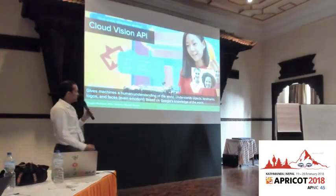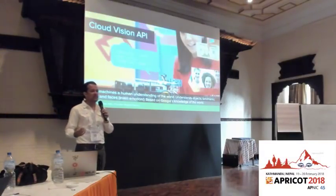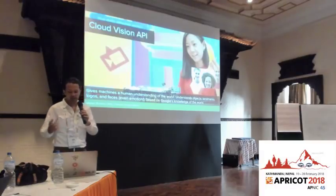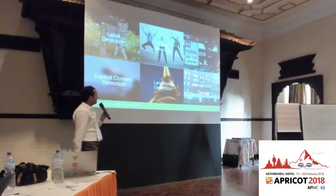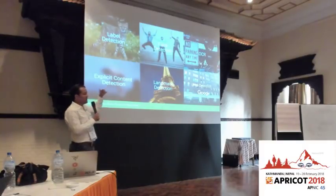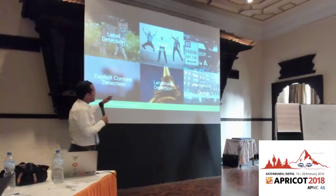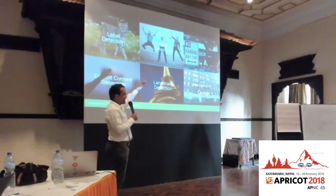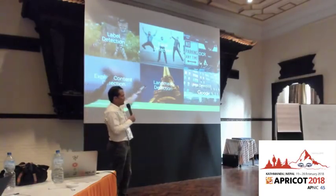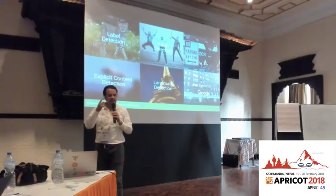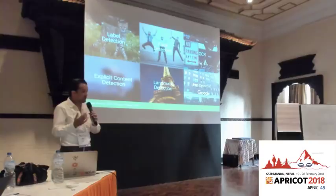First up is the Cloud Vision API. As you'd expect, you send us an image and we send you back a response of what we can see in it. We can find objects that Google knows about, look for faces and detect emotions on those faces — happy, sad, and so on. We can extract text from images using optical character recognition, detect explicit content, famous landmarks, and famous logos. By sending us a single image, you can get all this information back and use it to make something really cool.